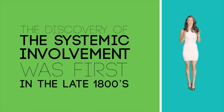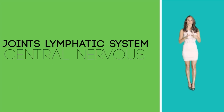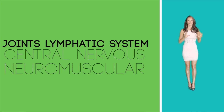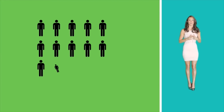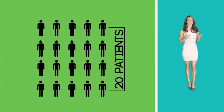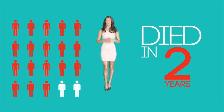Lupus is known for a butterfly rash on the face, first seen in the early 1800s. The discovery of systemic involvement was first seen in the late 1800s, including the joints, lymphatic system, central nervous system, neuromuscular, and circulatory system. In the early 1900s, the butterfly rash was seen in 20 patients who also had systemic involvement of the lungs, heart, kidney, and brain — now known as the advanced stages of lupus.